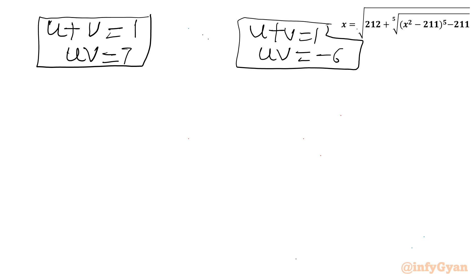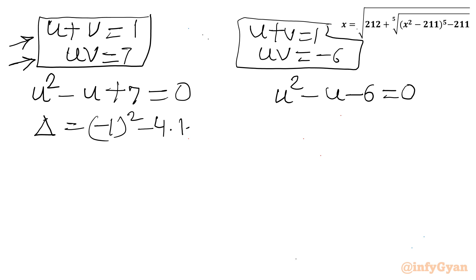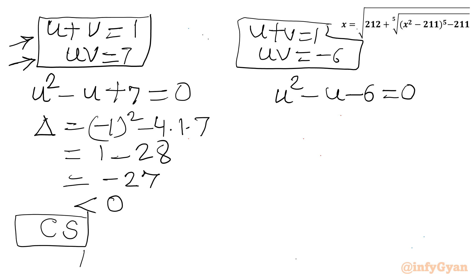Treating u and v as roots of a quadratic, System 1 gives u² − u + 7 = 0. Checking the discriminant: (−1)² − 4(1)(7) = 1 − 28 = −27. Since the discriminant is negative, this gives complex solutions, so we reject System 1.